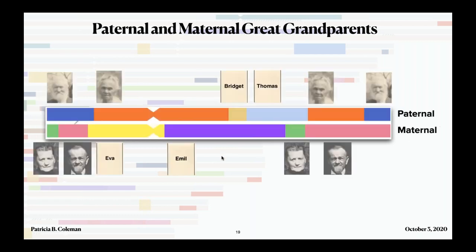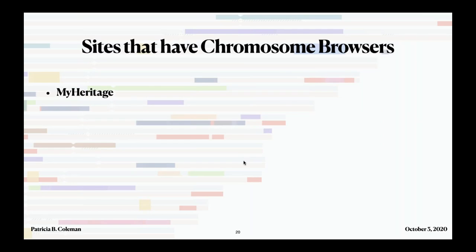Going back another generation: on my dad's side it would be Edward, Pauline, Bridget, and Thomas — I may one day find pictures of Bridget and Thomas among my dad's unlabeled photos. On my mother's side there's Anna Marie, Jacob, Ava, and Emil. I doubt I'll ever find a picture of Ava and Emil because a lot of my mother's pictures were lost in a hurricane flood.